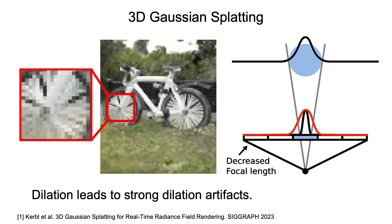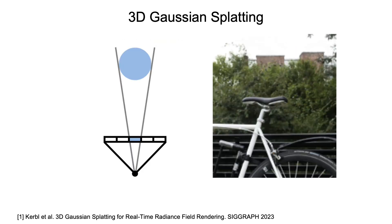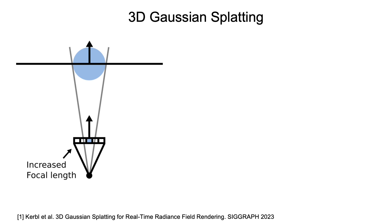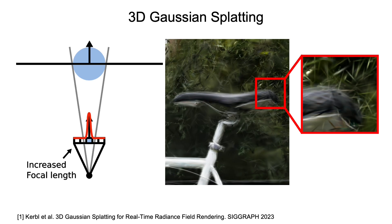On the other hand, the dilation operation also leads to degenerated 3D Gaussians. Specifically, to represent high-frequency details in the 2D space, the dilated Gaussian becomes small, which in turn results in very small 3D Gaussians. Here we show an extreme case when the 3D Gaussian becomes a delta function. The rendered results are reasonable at the training distance due to the compensation of dilation. When zooming in or increasing focal length, however, the amount of dilation does not match the real object, resulting in erosion and high-frequency artifacts.